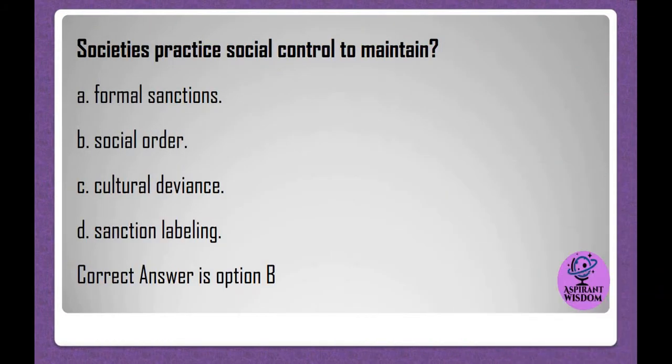Societies practice social control to maintain: A. Formal sanctions. B. Social order. C. Cultural deviance. D. Sanction labeling. Correct answer is option B.